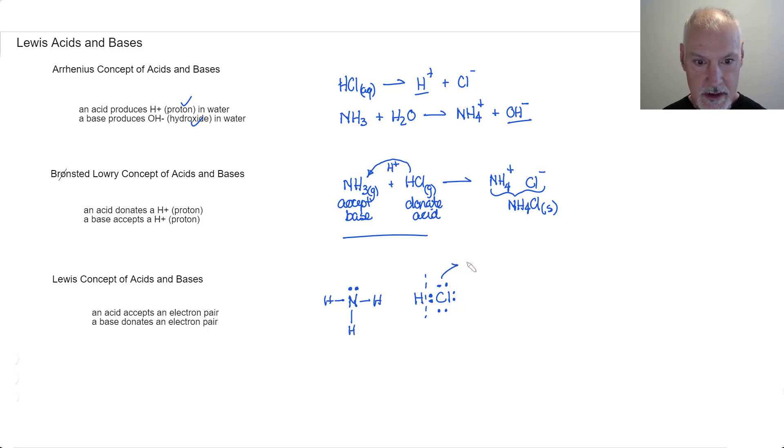So this would now generate a chloride ion. H would now become positively charged. And it would be short electrons. It would be needing electrons. And it would then go seek out this pair of electrons that were present in the ammonia. So we can see here that the ammonia donates a pair of electrons to the proton.